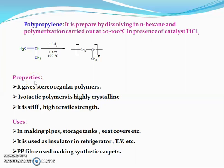Properties of polypropylene: it undergoes catalytic polymerization and forms stereoregular polymers. It can be isotactic, syndiotactic, or atactic. Isotactic polypropylene is highly crystalline in nature with a melting point of 208°C. It has very high tensile strength.